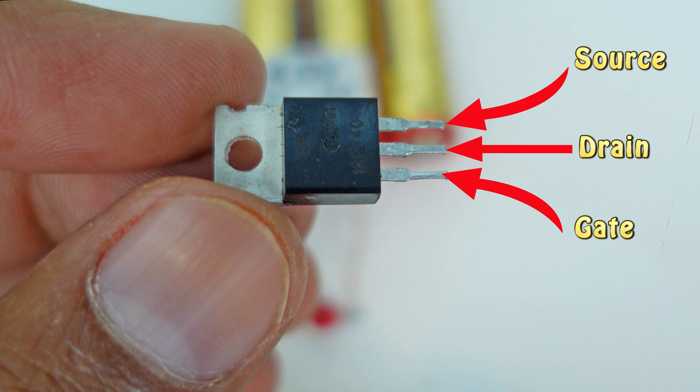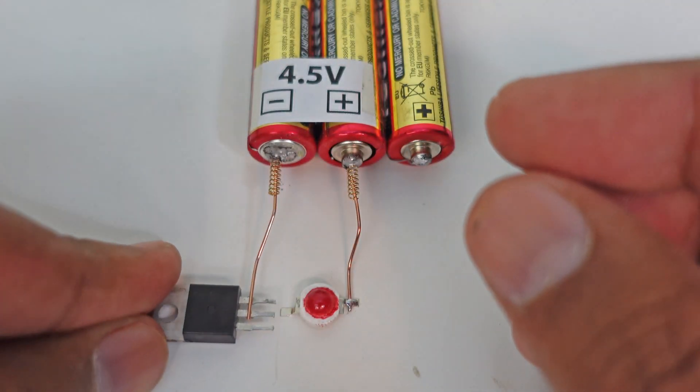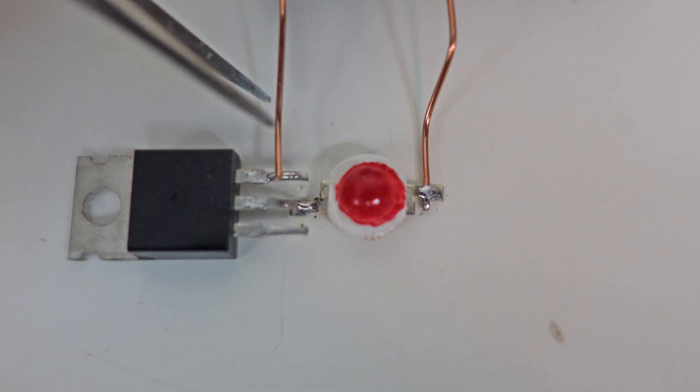The MOSFET receives current from the source. The MOSFET sends current out from the drain and the gate acts as a switch which controls the flow of current. We will not make things too difficult to understand. Let's take the experiment further. We connect the drain of the MOSFET to the LED light and the source to the battery cell.